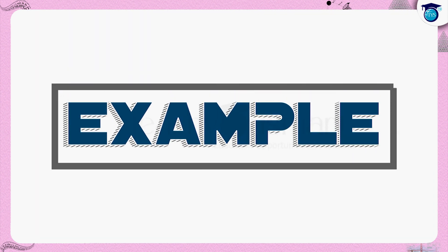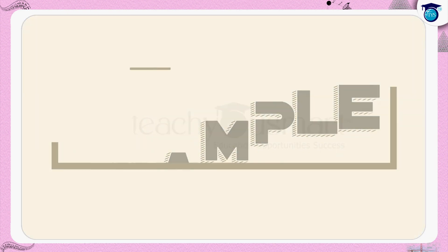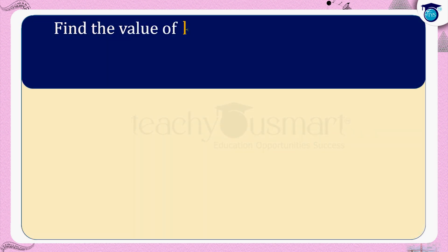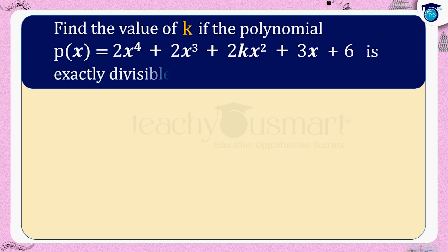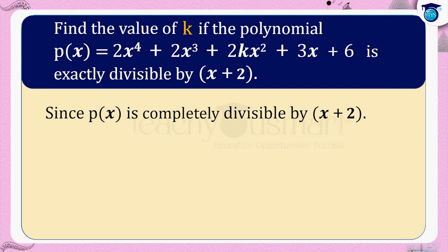Let us do another example. Find the value of k if the polynomial p(x) = 2x⁴ + 2x³ + 2kx² + 3x + 6 is exactly divisible by (x + 2). Since p(x) is completely divisible by (x + 2), (x + 2) is a factor of p(x).